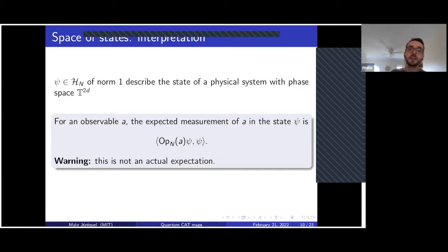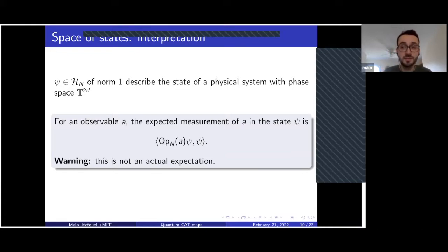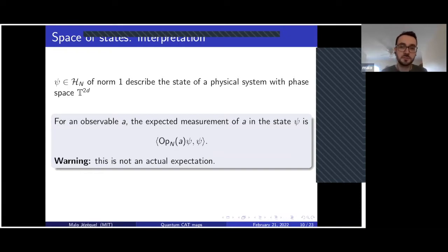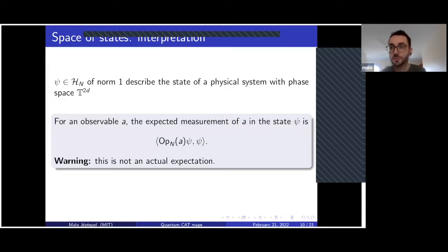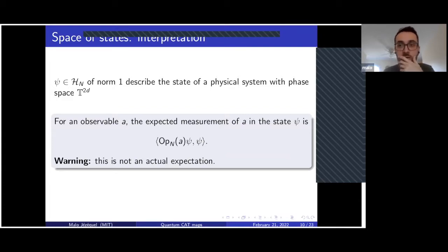There is a very important result regarding inequalities that says that when N tends to infinity, this thing tends to behave like a probability measure — it is almost positive. So if you take an adherence value when N tends to infinity, you will get something which will be a probability measure on the 2d-dimensional torus.